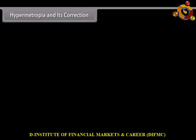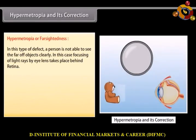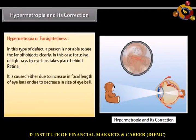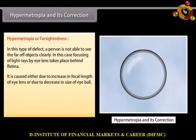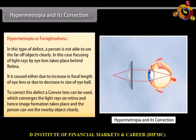Hypermetropia and its correction. In this type of defect, a person is not able to see nearby objects clearly. In this case, focusing of light rays by the eye lens takes place behind the retina. It is caused either due to increase in focal length of the eye lens or due to decrease in size of the eyeball. To correct this defect, a convex lens is used which converges the light rays on the retina, and hence image formation takes place and the person can see the nearby object clearly.